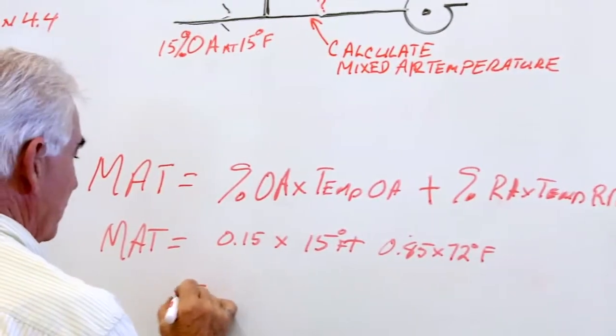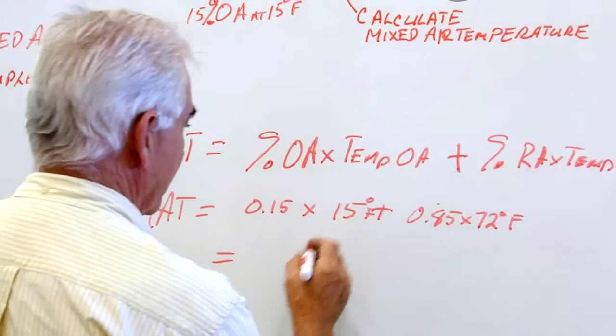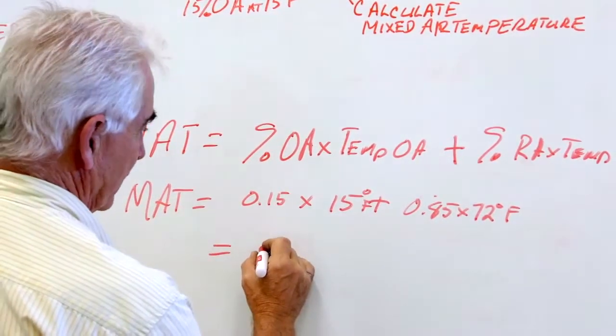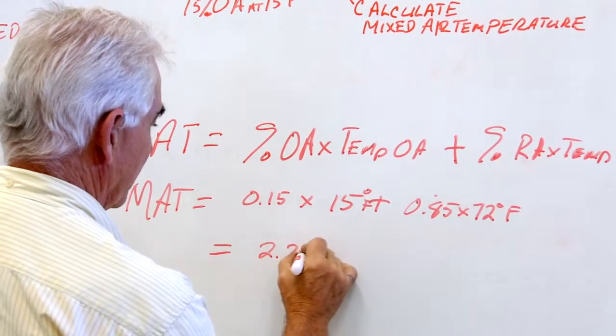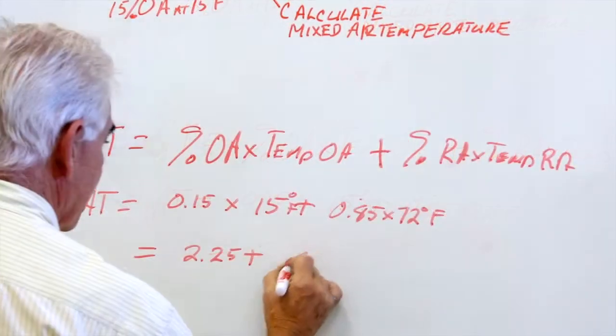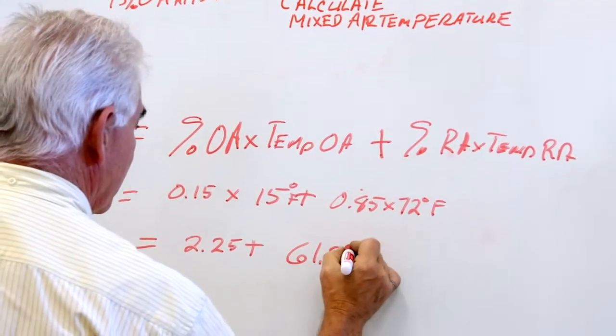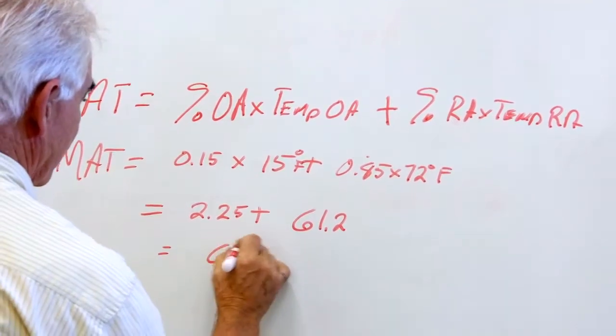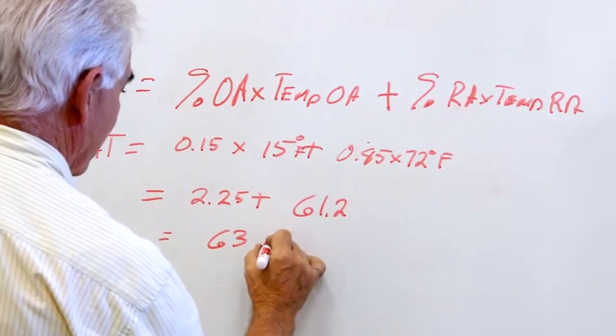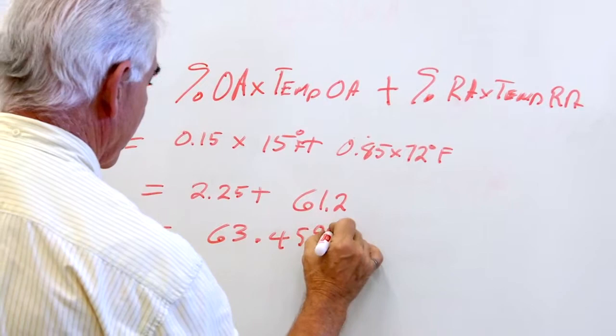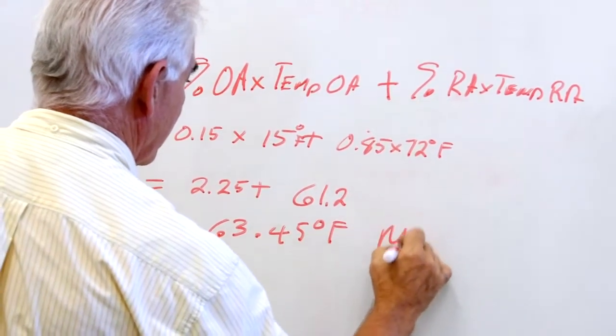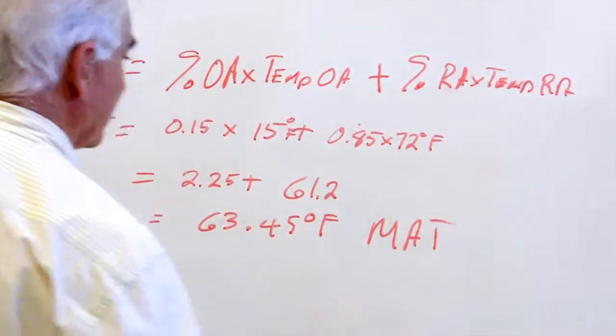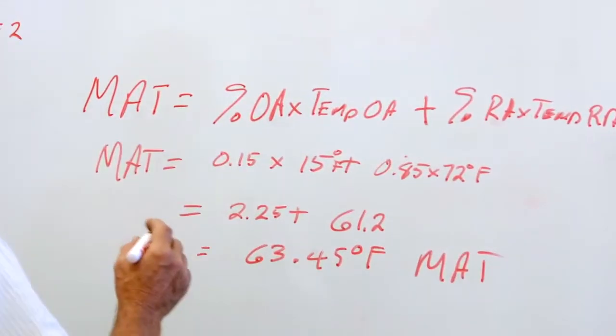And when we work that out, we get 15 times that. That's 2.25 plus 61.2 and that's equal to 63.45 degrees Fahrenheit mixed air temperature.